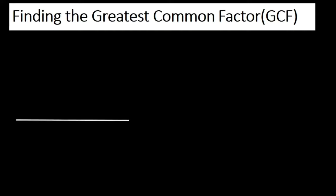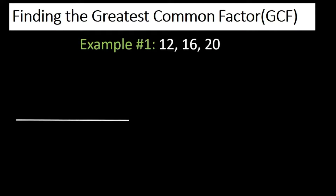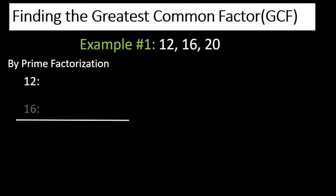Let's proceed to finding the greatest common factor of given numbers. This time let's have 12, 16, and 20. I'll be showing two ways to find the greatest common factor. The first would be by using prime factorization.